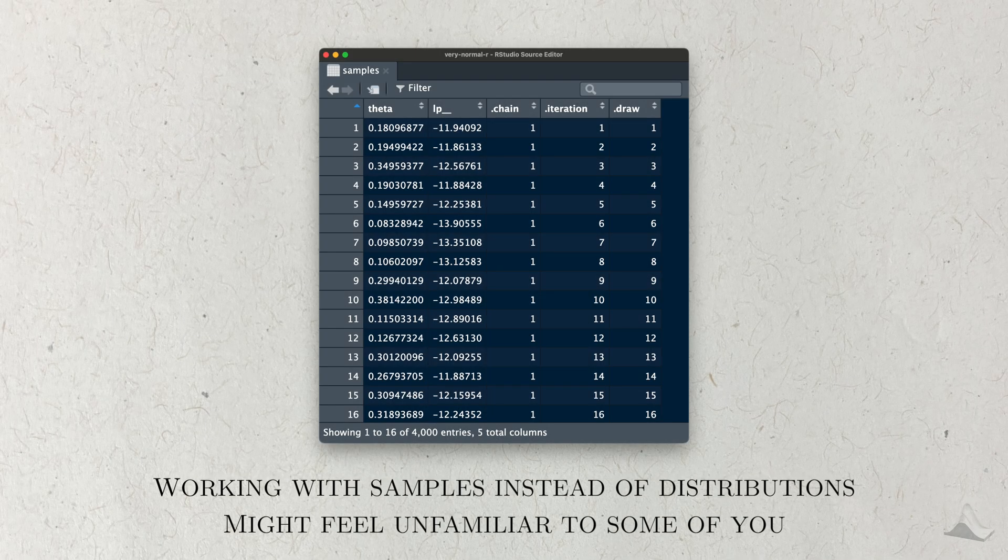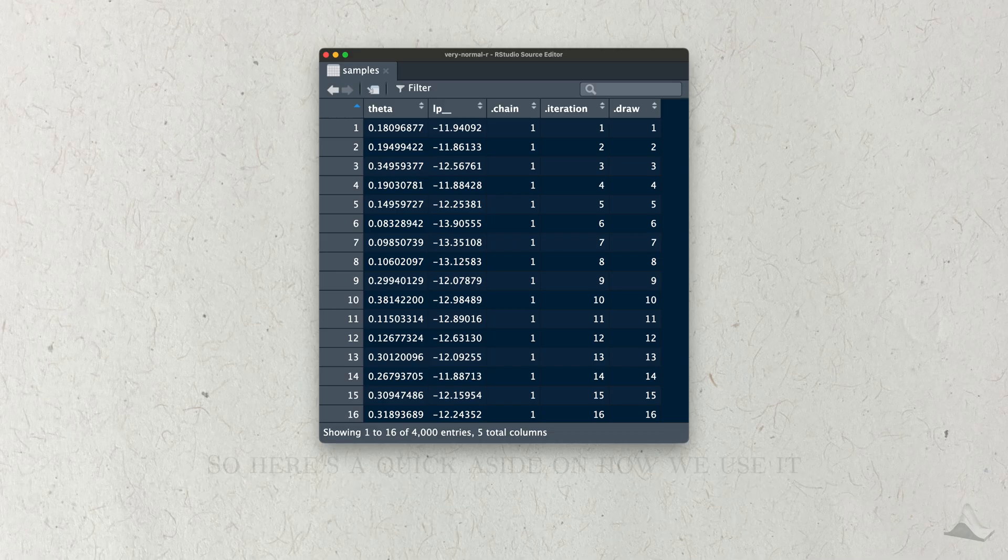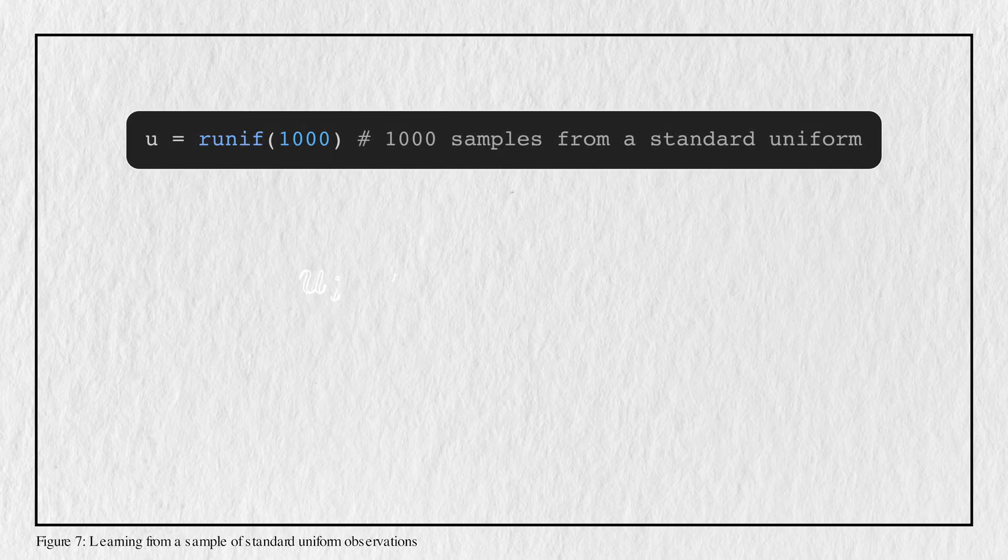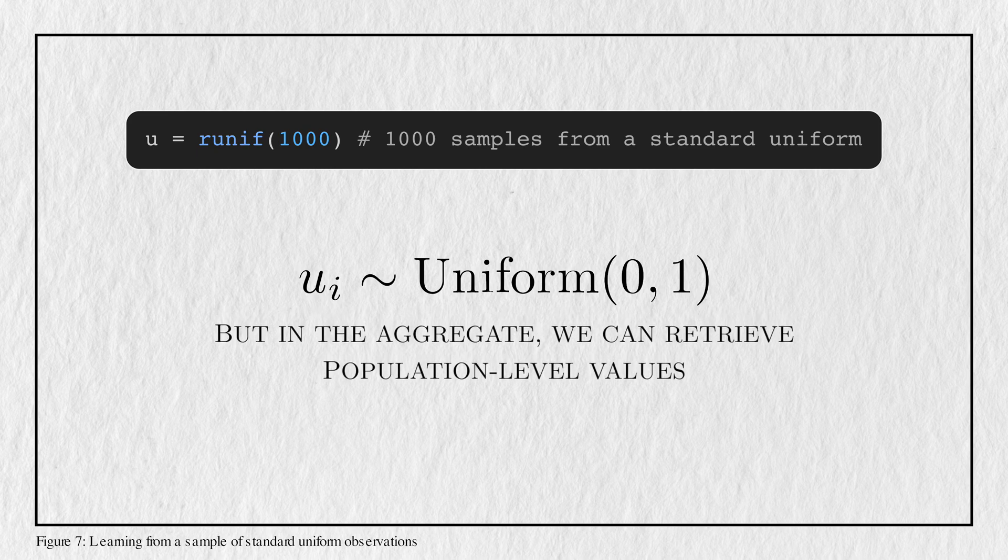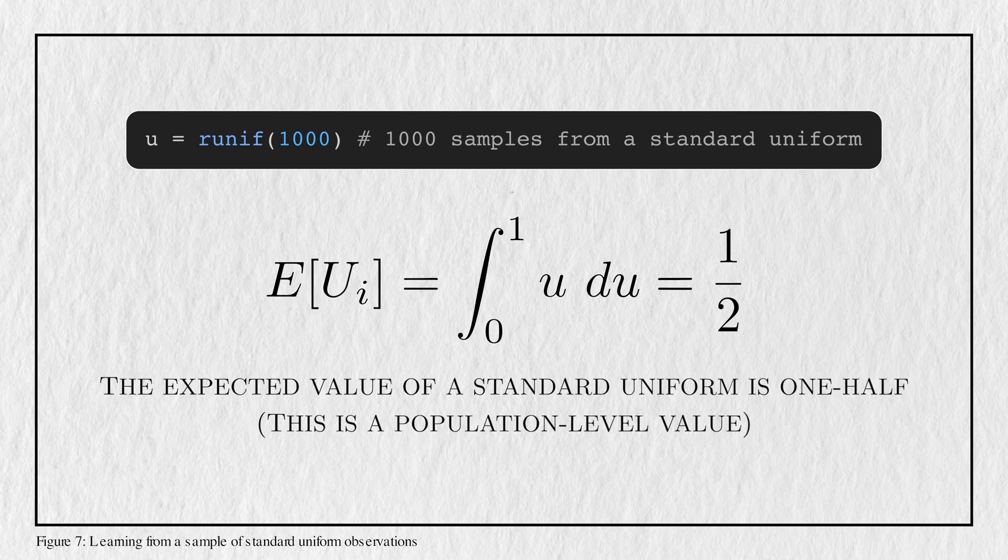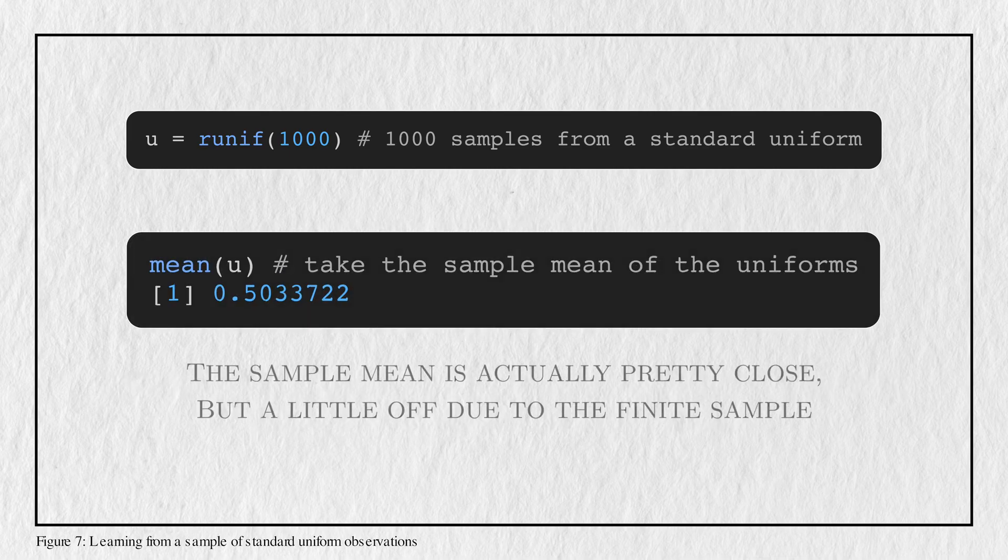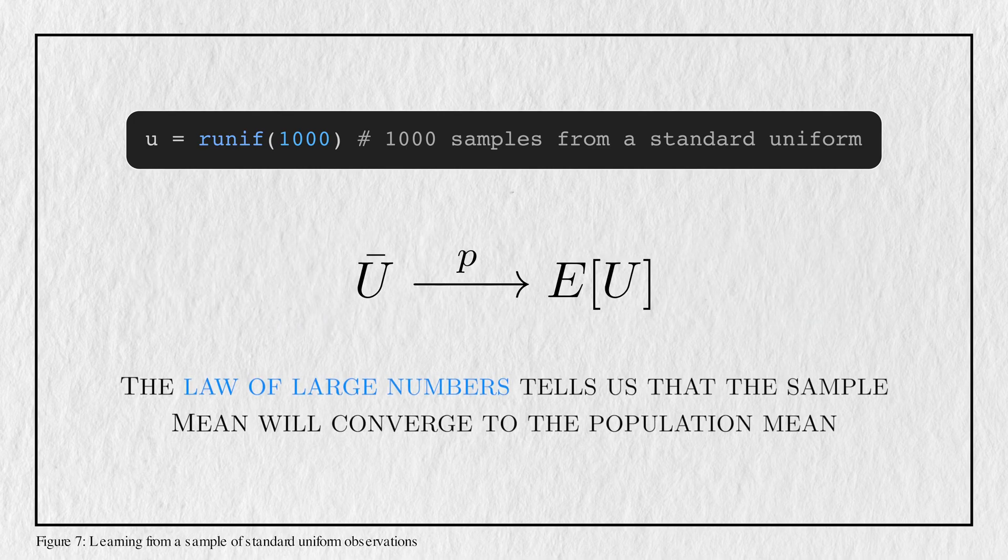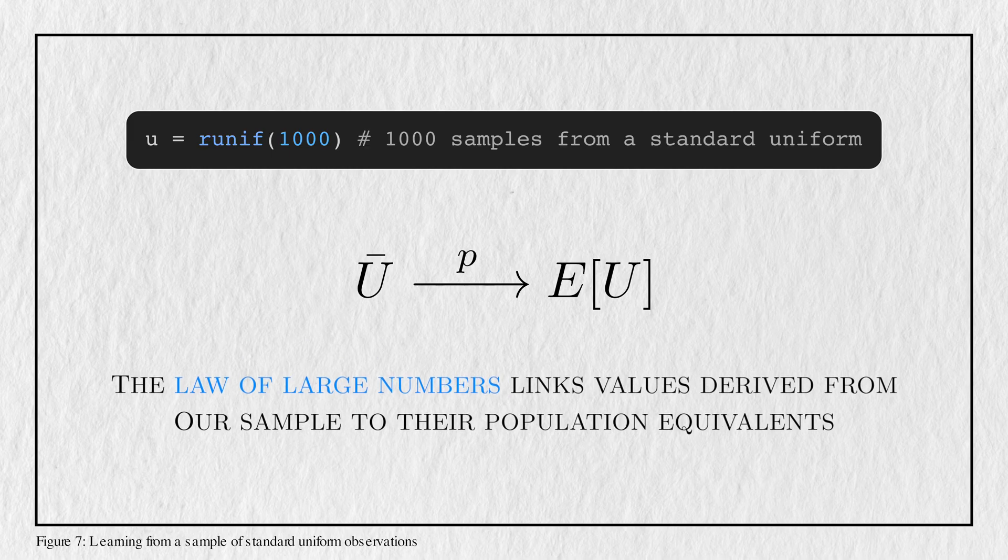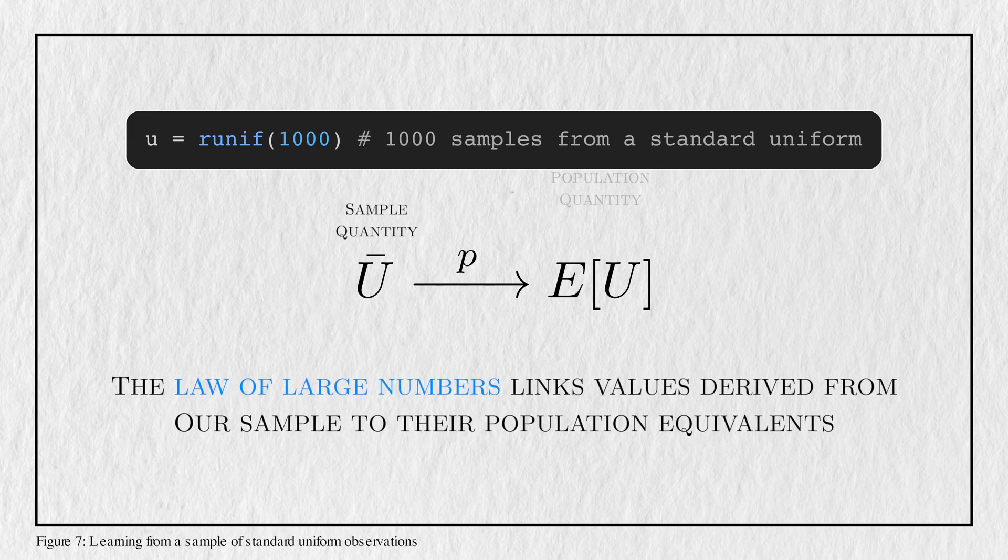Working with the sample in this way might feel strange to you, especially if this is your first time using Bayesian statistics. So to demonstrate how we can use it, let me teach you through a quick aside. I'm going to generate 1,000 samples from a standard uniform distribution. Like the posterior distribution, we'll have a bunch of numbers that are realizations of the standard uniform. By themselves, they don't tell us much, but in the aggregate we can retrieve the properties of the population distribution that generated them. For example, we know that the expectation of a standard uniform is 1/2. You can derive that using integration. But with the sample, we can calculate it with the sample mean. You can see that it's pretty close to 0.5, but it's a little bit off because we're dealing with a finite sample. Well, we also know that the law of large numbers tells us that the sample mean will converge to the population mean, or expectation, as the sample size grows to infinity. And this is key here. The law of large numbers helps us link the sample values back to their population equivalents.